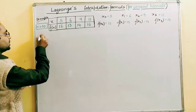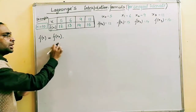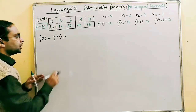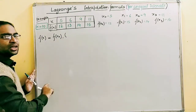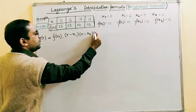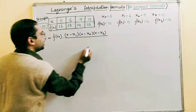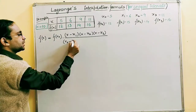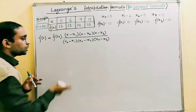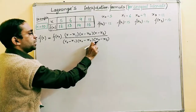Now let me define the terms. The first term begins with f(x₀), multiplied by a fraction. In the numerator, we write all factors (x − xᵢ) skipping the one related to x₀, so we have (x − x₁)(x − x₂)(x − x₃). In the denominator, we write (x₀ − x₁)(x₀ − x₂)(x₀ − x₃) — we skip x₀ − x₀ because that would give zero, and we must never have zero in the denominator.